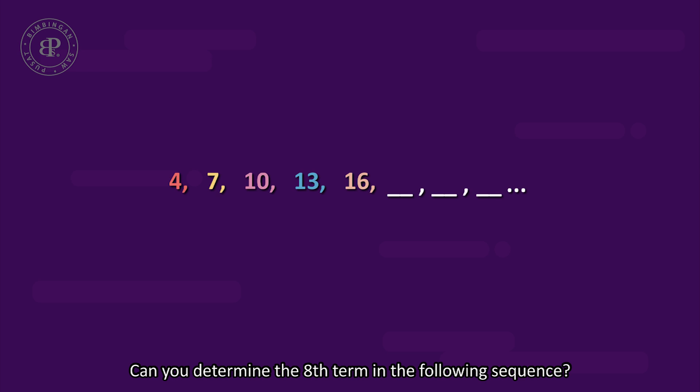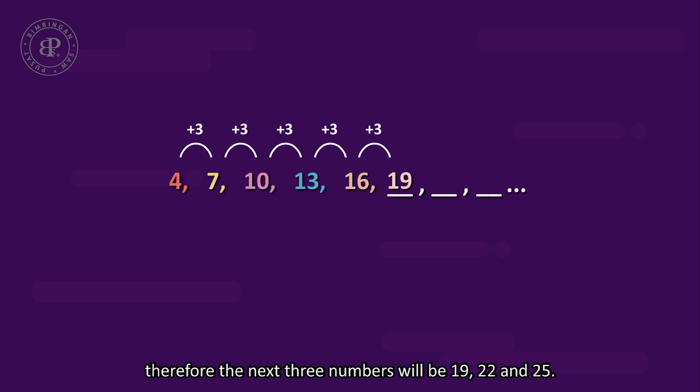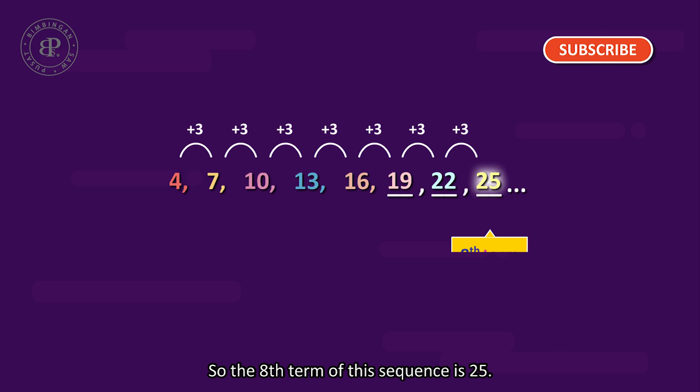Can you determine the 8th term in the following sequence? This sequence begins with 4, and the pattern is obtained by adding 3 to each subsequent number. Therefore, the next 3 numbers will be 19, 22, and 25. So, the 8th term of this sequence is 25.